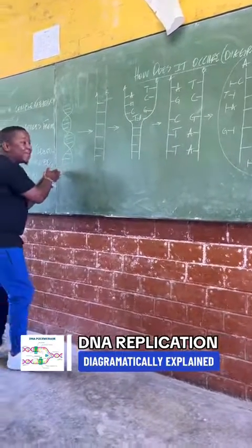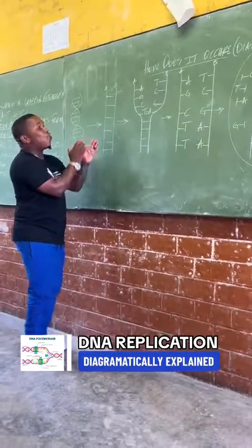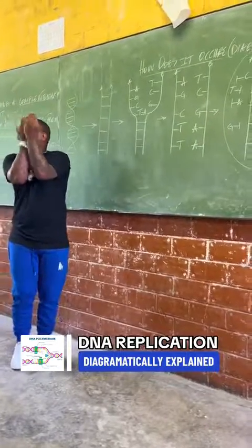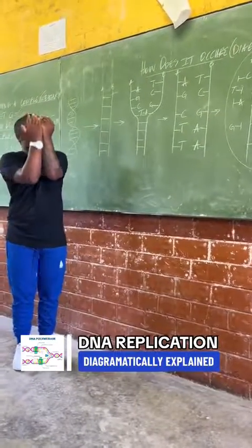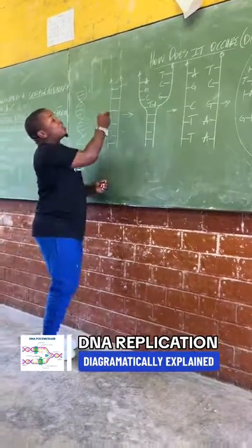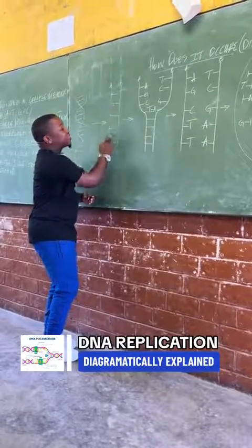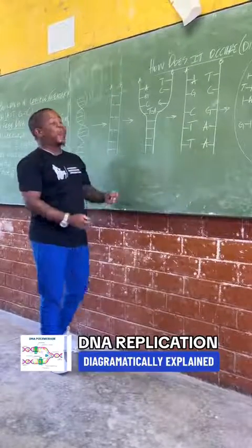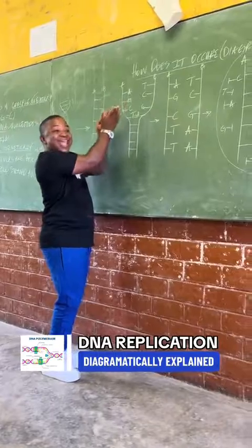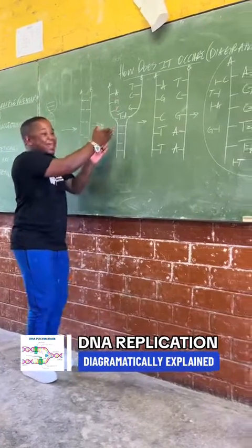A DNA that will help it unwind. When it unwinds, the hydrogen bonds between nitrogenous bases break. Here are the strands — they are breaking and the DNA molecule is unzipping.